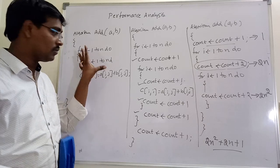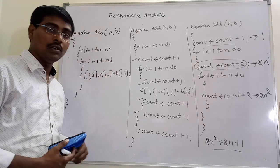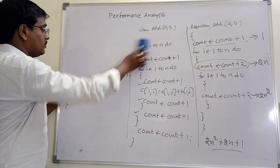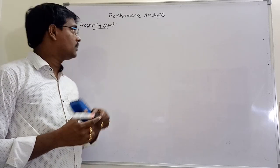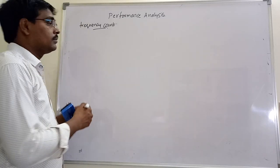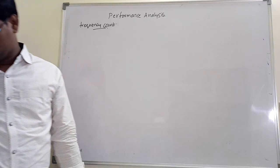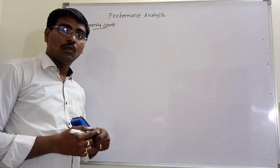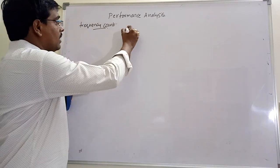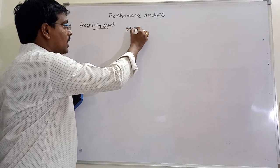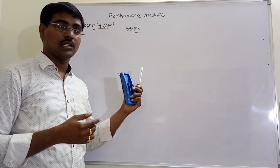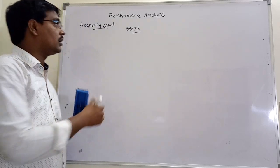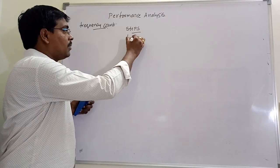Next we will calculate the step count by using the frequency count mechanism. In frequency count mechanism, we are calculating the number of steps required for execution of each statement — that means how many number of times each statement is executed. This is represented in table format. The table contains three parameters: statement, steps for execution (how many steps are required for executing a statement), and frequency (how many times the statement is executed), and a total value column.